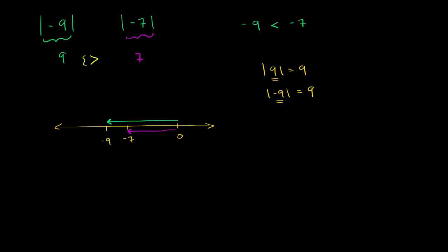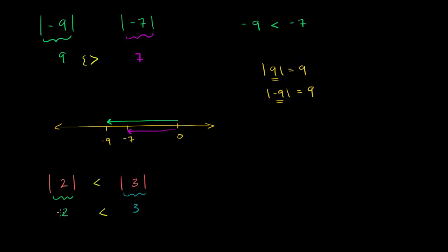Let's do a few more. Let's compare the absolute value of 2 to the absolute value of 3. The absolute value of a positive number is just that same value. 2 is 2 to the right of 0, so this evaluates to 2. The absolute value of 3 evaluates to 3. So 2 is clearly the smaller number — the absolute value of 2 is less than the absolute value of 3, giving us a less than symbol here.